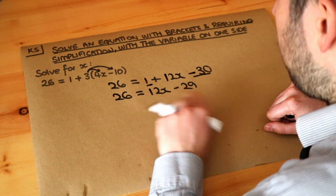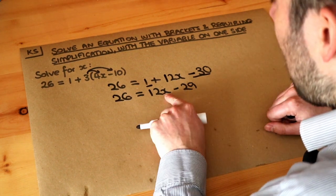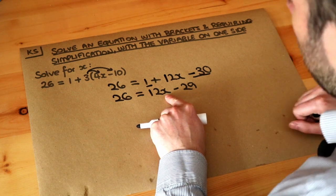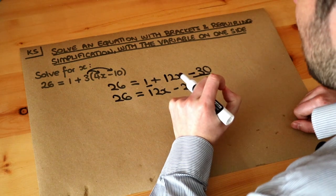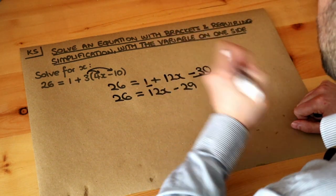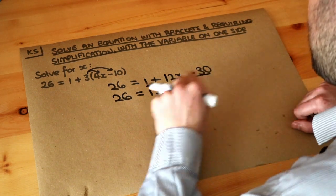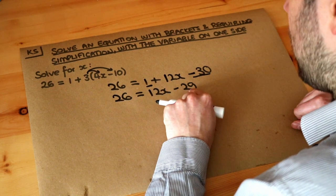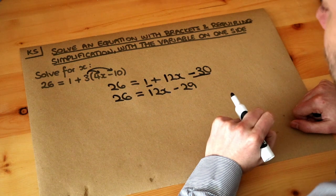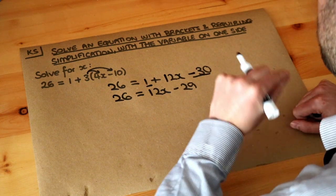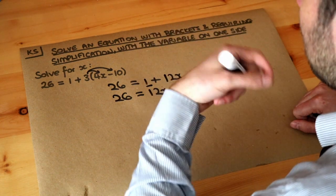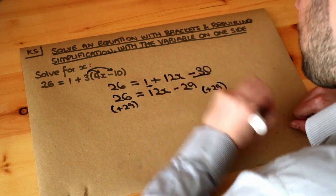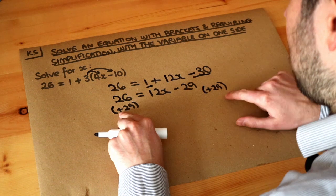Now we've got x on one side of the equation, we want to get that x on its own in order to solve the equation. And remember, the way we do that is to think what's happening to x and to undo the last thing that happened to x. So x is being multiplied by 12, and then we subtracted 29 from it. The last thing we did to x was subtract 29, so we do the opposite to undo it. The opposite of subtracting 29 is adding 29, and we do that to both sides of the equation.